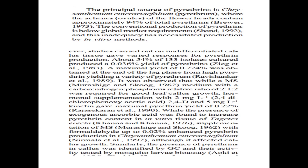Specific elicitors and precursors for pyrethrin production are added, and this optimization is done with many plants that have shown the presence of pyrethrin. The amount of pyrethrin can be identified using gas chromatography or high-pressure liquid chromatography, which are analytical techniques to identify the presence of the particular secondary metabolite.